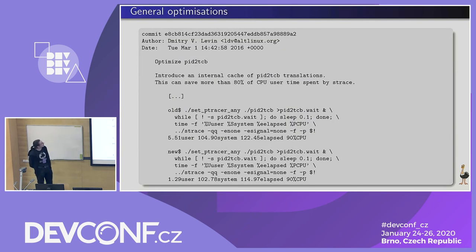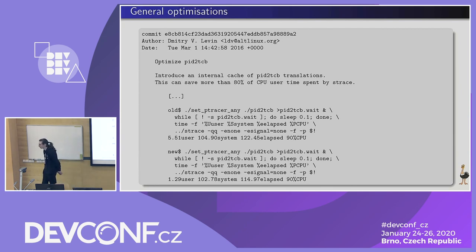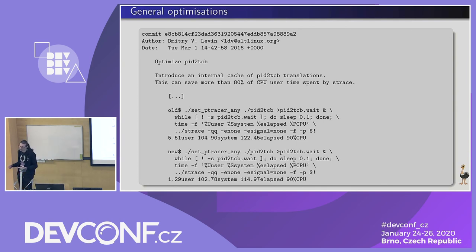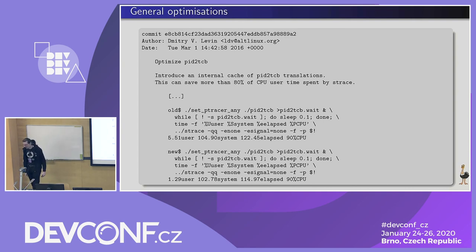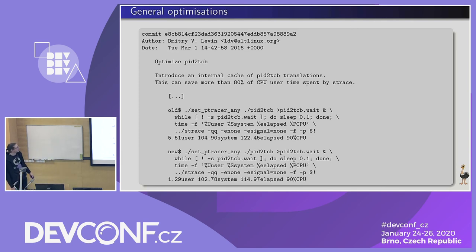Another thing done is general optimizations. It was usually assumed you don't have a lot of processes to trace, so a simple algorithm was implemented for matching a PID to a tracee control block — the tracee description structure. But when you have a lot of processes, it starts eating a significant amount of CPU time. By implementing trivial hashing using the lowest 10 bits of the PID, it was sped up quite significantly — in an artificial example, it was a five times speedup.